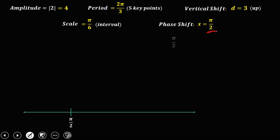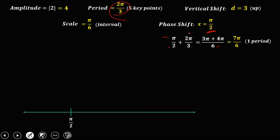From the phase shift, add the period: π/2 plus 2π/3. The LCD is 6, so 6 divided by 2 is 3, times π gives 3π; and 6 divided by 3 is 2, times 2π gives 4π. Simplify: 3π plus 4π over 6 equals 7π/6. So this is 1 period, or 5 key points.